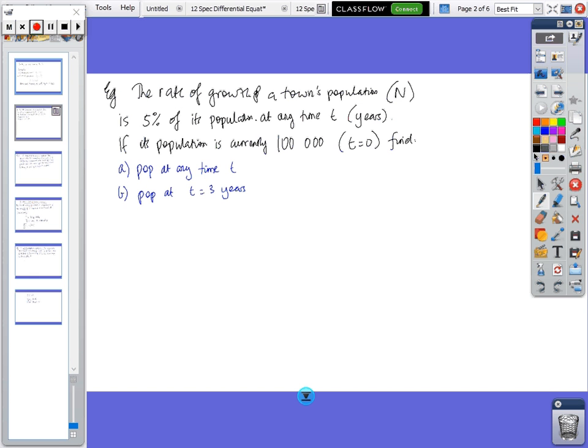find the population at any time t and the population in three years. Okay, so first thing we do is the rate of growth, so dn/dt is proportional to the number. So it's directly proportional and that's the constant of proportionality. The rate of growth depends on the population.